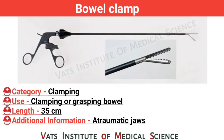Bowel clamp. Category: clamping. Use: clamping or grasping bowel. Length: 35 cm. Additional information: atraumatic jaw.